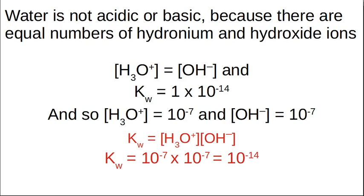In water, the pH is 7. It's neutral — not acidic or basic — because the concentration of hydronium ions is equal to the concentration of hydroxide ions. That water ionization is balanced, so there's an equal number of hydronium ions to hydroxide ions. We've worked out that Kw is 1 × 10⁻¹⁴. So Kw equals the concentration of hydronium ions times hydroxide ions, and the equilibrium constant is 1 × 10⁻¹⁴. It works out as 10⁻⁷ × 10⁻⁷ = 10⁻¹⁴.